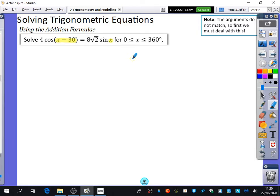So what I've written inside that blue box is that the arguments do not match, and we can't solve trig equations just by dividing by cos to make it become tan. We can't just do that because the arguments don't match. If this was 4 cos x = 8√2 sin x, we could solve that because the arguments match. And I could divide by cos on both sides, so I get 4 = 8√2 tan x.